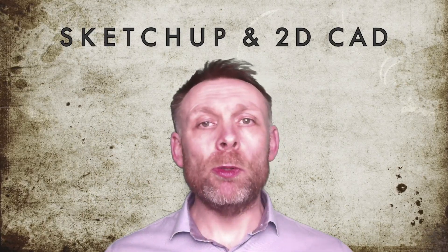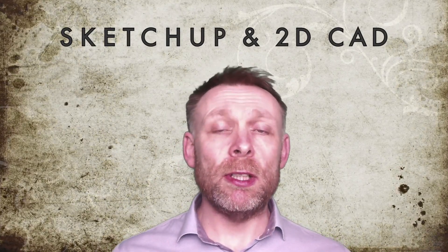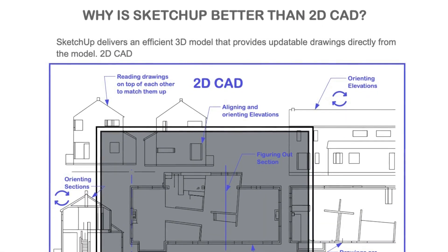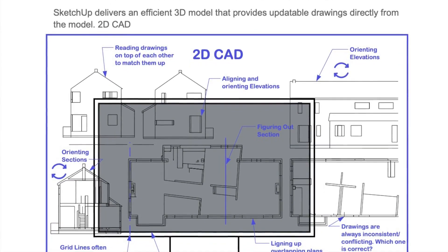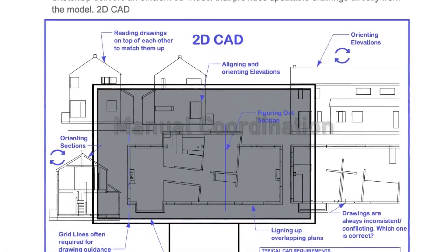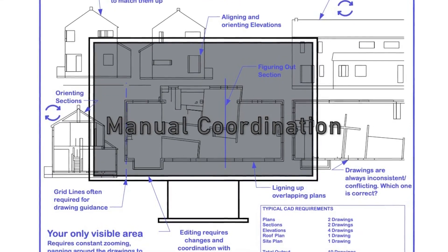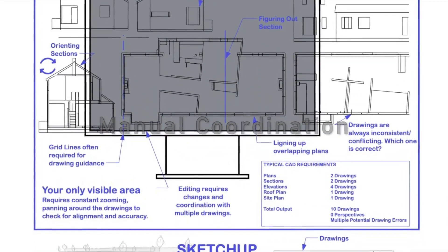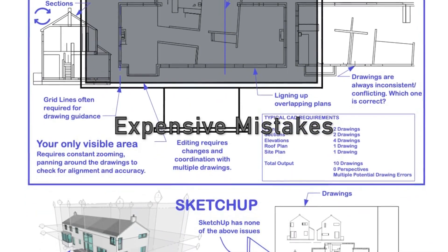SketchUp Pro solves the problems inherent in two-dimensional CAD. 2D CAD is great for drawing but usually plans don't all fit on one screen. Drawings all have to be manually coordinated and you need to try and match them up. It's a real headache and costly mistakes do get made.